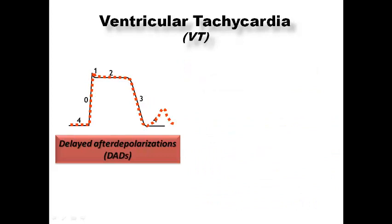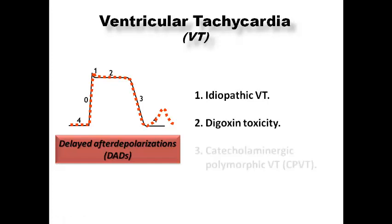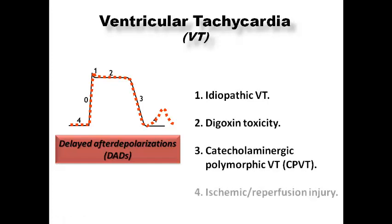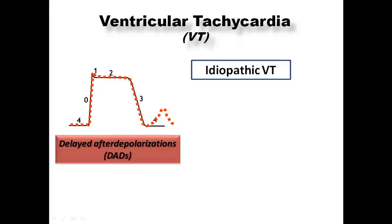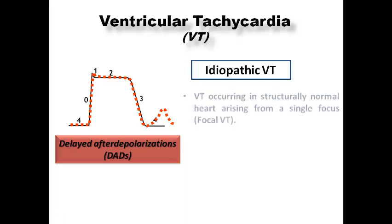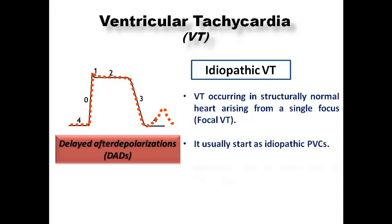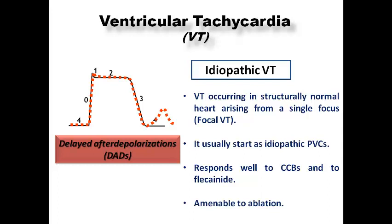Delayed afterdepolarization (DAD) can occur in idiopathic VT, digoxin toxicity, catecholaminergic polymorphic VT, and sometimes in ischemic or reperfusion injury. Idiopathic VT — despite its name — is actually caused by triggered activity from DAD, usually originating from a single focus (focal VT). The most common origin is the right ventricular outflow tract (RVOT). It occurs in a structurally normal heart, responds to calcium channel blockers, flecainide, and beta-blockers, and is amenable to ablation with high success rate.